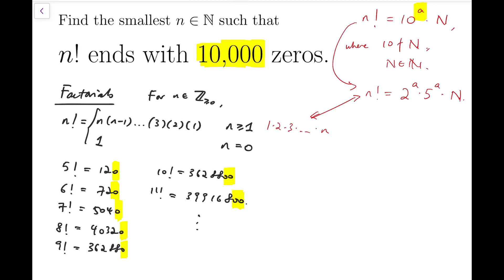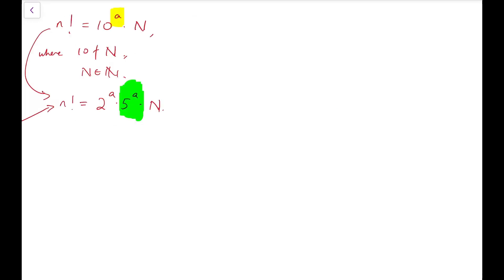And on the other hand, factors of 5 are kind of rarer than factors of 2. So we can further reinterpret the statement as to only focus on how far can we divide n factorial by 5. Not considering dividing by 10, but only to consider dividing by 5.